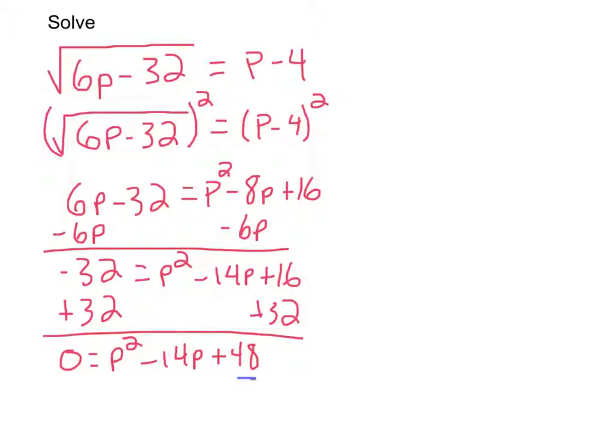So I need two numbers that multiply together to give me 48, but when you add them together to give you negative 14, I can quickly identify that that is negative 6 and negative 8. So I'm going to do that. I'm going to take this and I'm going to rewrite this right back up here. That's p minus 6 times p minus 8 equals 0.